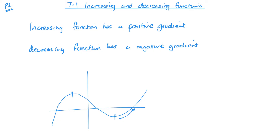And here, for example, we can see this is going to have a decreasing function — a negative gradient, to give you a couple of examples. When we're doing this we always need to talk about it being within an interval of two values, and we need to talk about the functions. We know that the gradient is found when we differentiate the function.